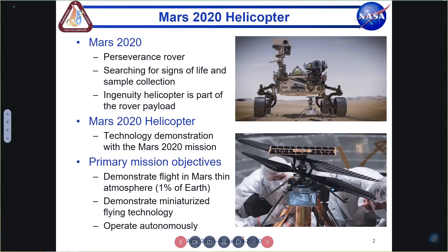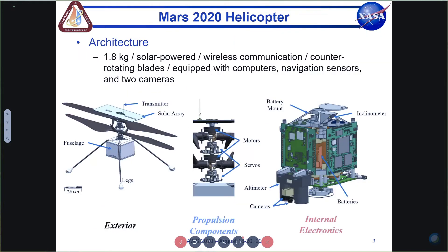Ingenuity is a tech demonstration. It's going to be situated in the belly of the rover, and once the rover lands in February 2021, the helicopter will deploy and hit Mars ground. Its primary missions are to demonstrate flight in Mars's thin atmosphere — about 1% of Earth's — and also to demonstrate miniaturized flying technology and autonomous operations.